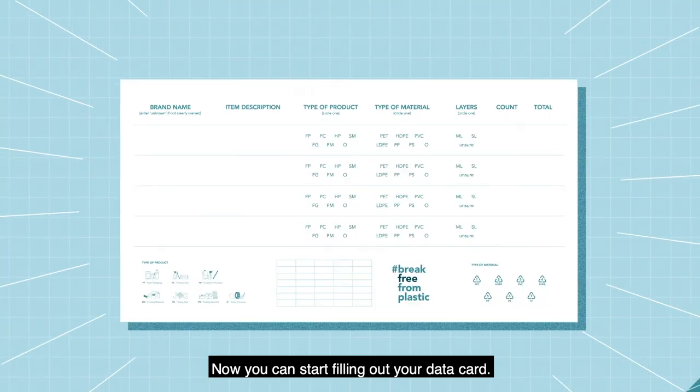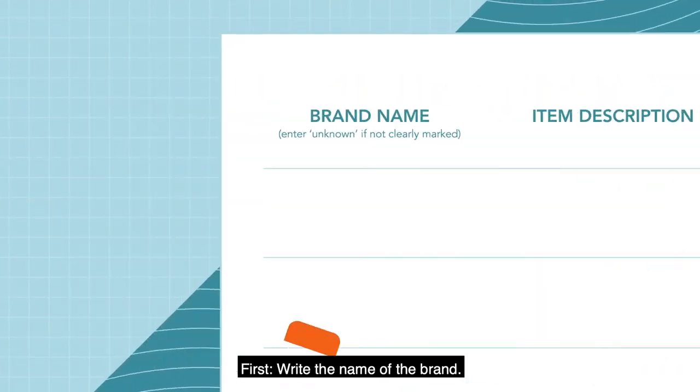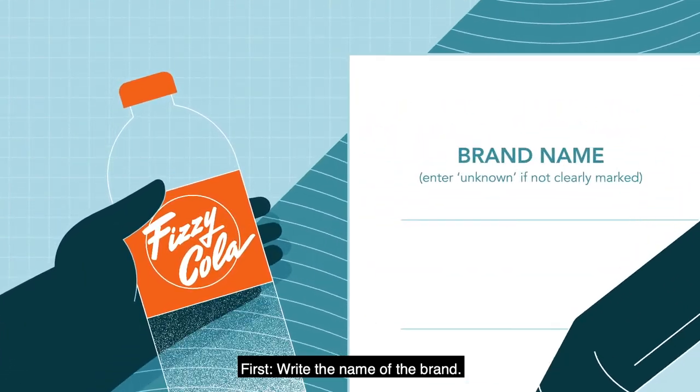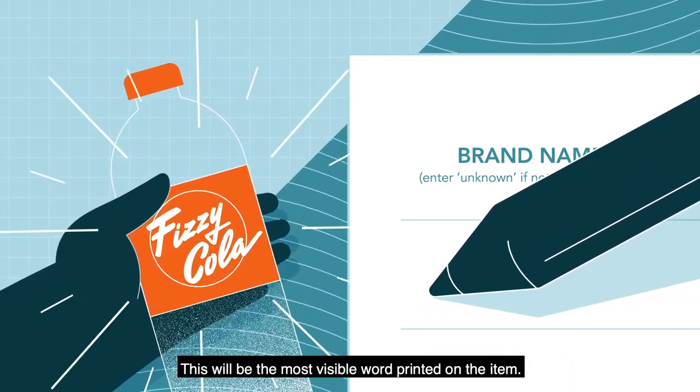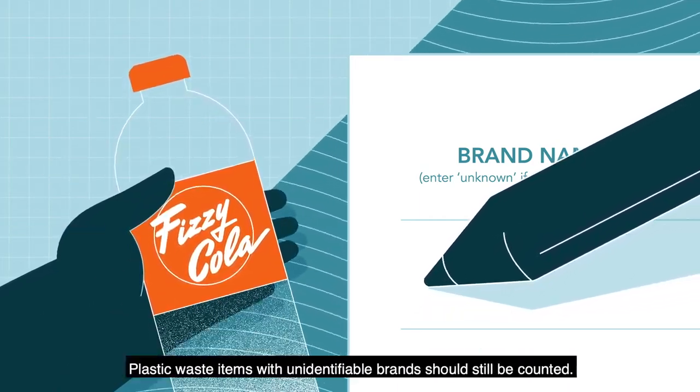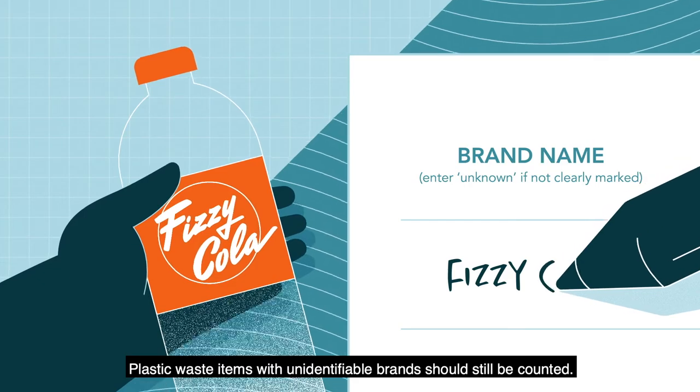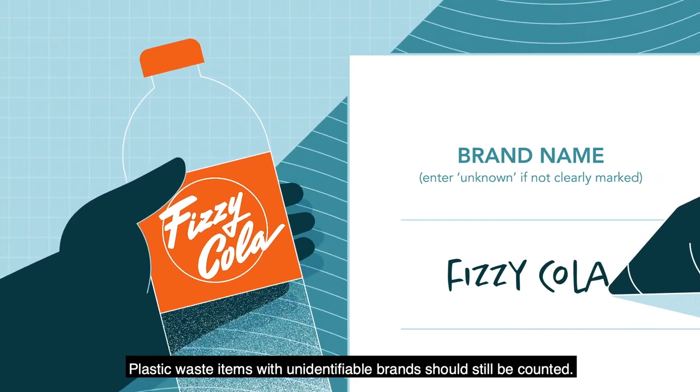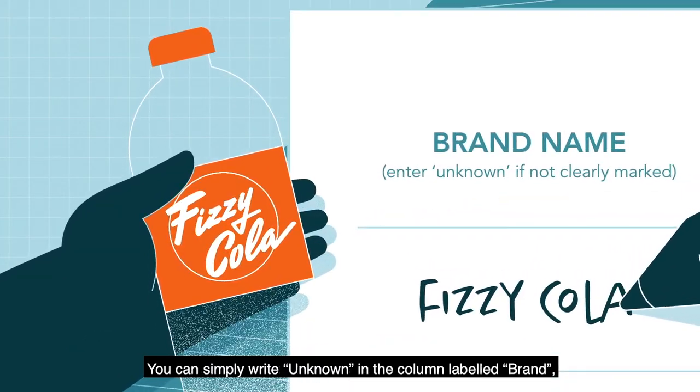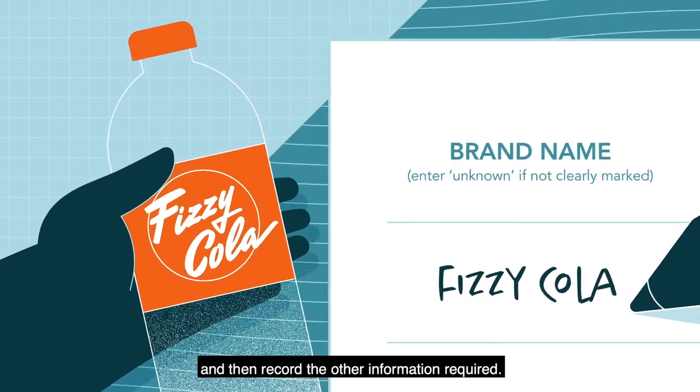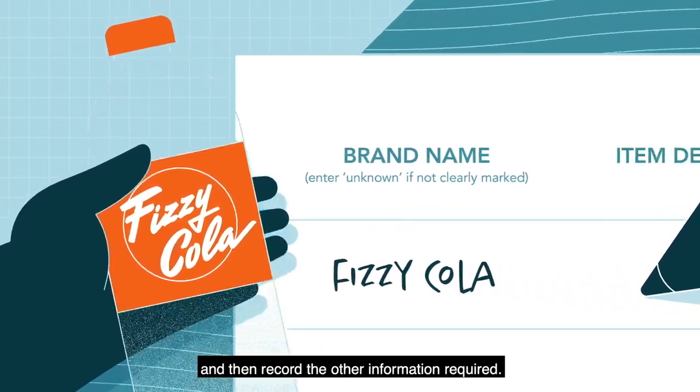Now, you can start filling out your data card. First, write the name of the brand. This will be the most visible word printed on the item. Plastic waste items with unidentifiable brands should still be counted. You can simply write unknown in the column labeled brand, and then record the other information required.